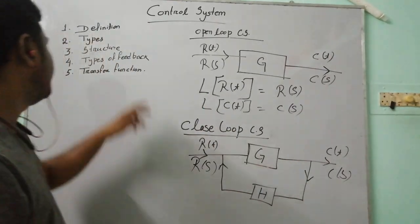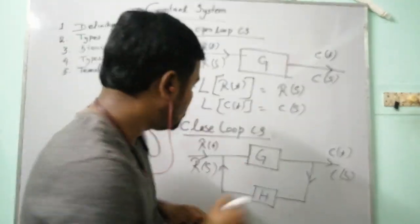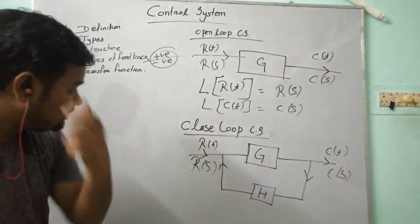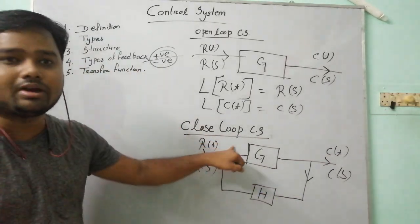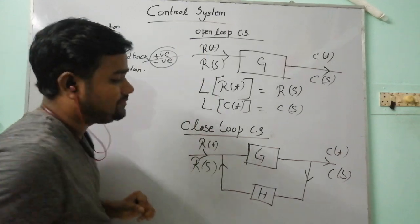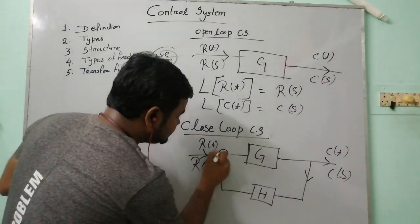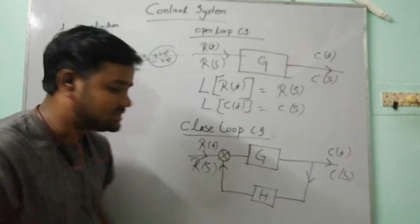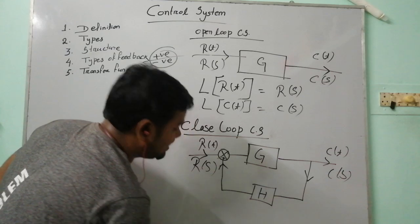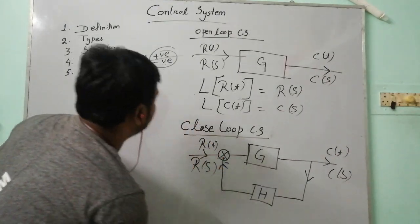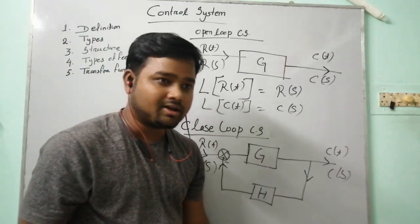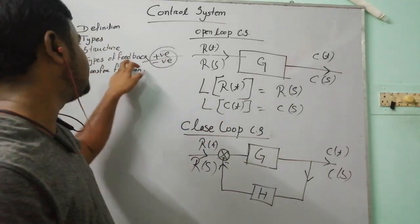Now we have to learn the types of feedback. There are two types: positive feedback and negative feedback. These apply only in the closed loop control system — in the open loop there is no feedback, so there is no positive or negative feedback. At the summing point, if the feedback path connects with a positive sign, it is a positive feedback control system; if the sign is negative, it is a negative feedback control system. The negative feedback control system is the most effective.